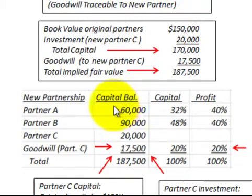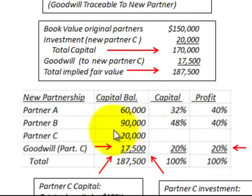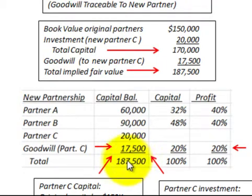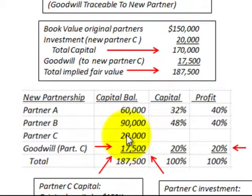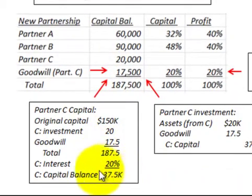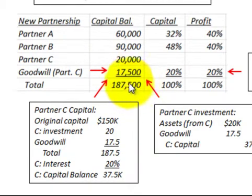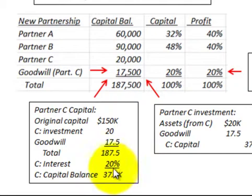Partner A has a $60,000 capital balance — their original amount. Partner B has a $90,000 capital balance — again their original amount. Partner C has $20,000 for the cash paid to enter the partnership, plus $17,500 of goodwill allocated to them, for a total capital balance of $37,500. The total capital balance for the new partnership is now $187,500, which equals the total implied fair value. Partner C's $37,500 is based on the $187,500 total capital times their 20% interest.